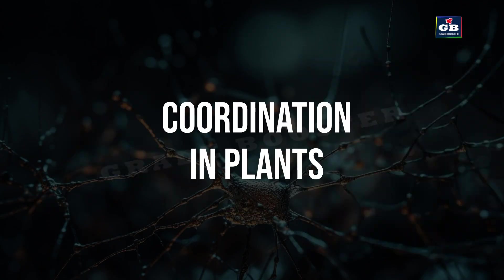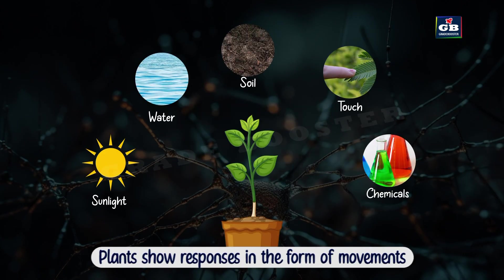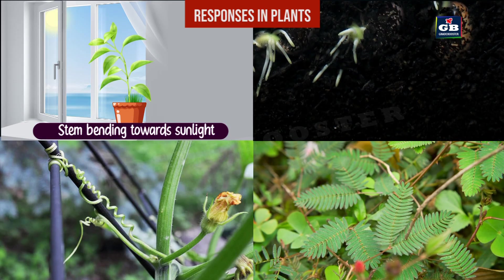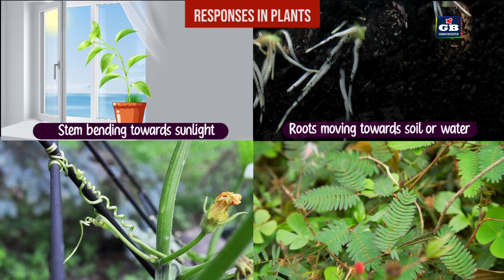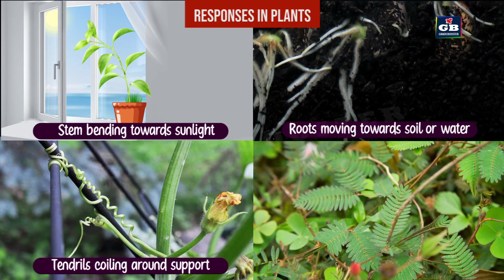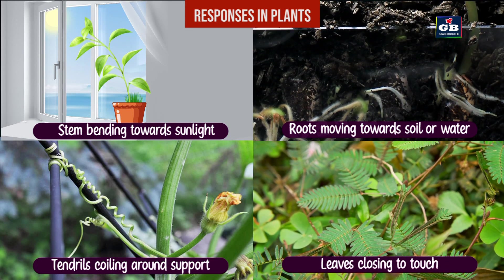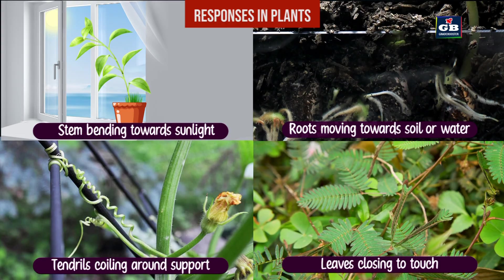Moving to the next topic — coordination in plants. Plants also respond to stimuli like sunlight, water, touch and chemicals. Their responses are mostly shown through movements. For example, stems bend towards sunlight, roots grow towards water or soil, tendrils coil around support, and the touch-me-not plant closes its leaves when touched.